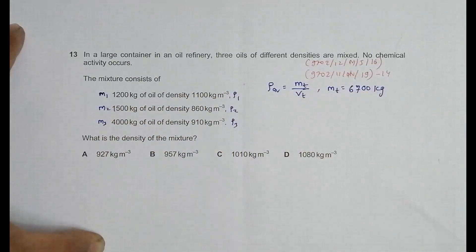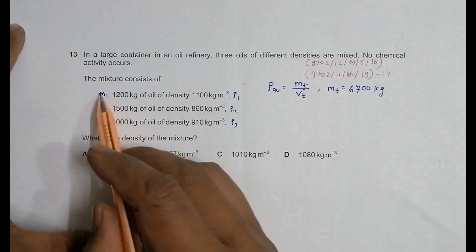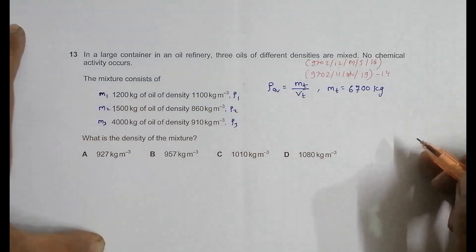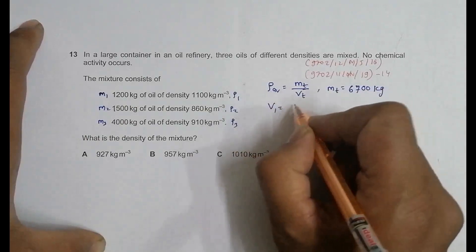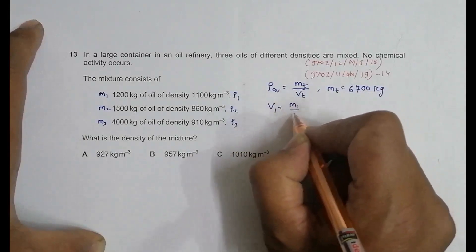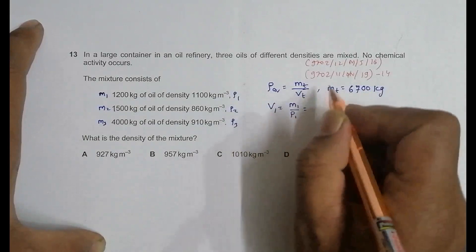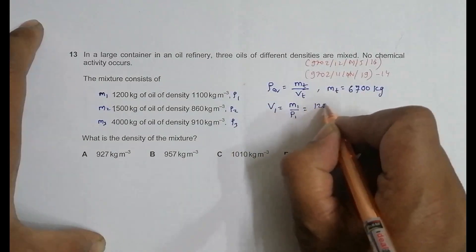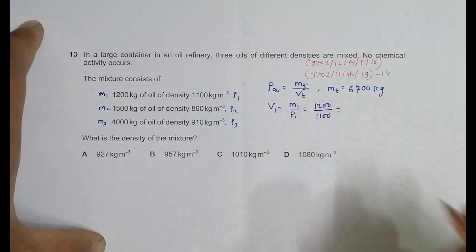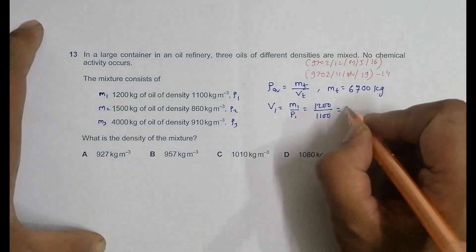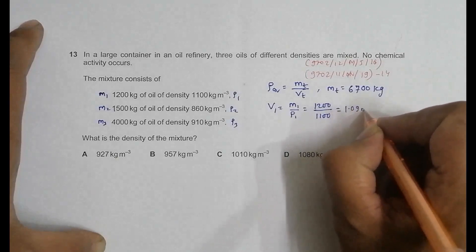Now with the data of masses and densities we have to find the volume because I need volume total. So V1 is equal to m1 divided by ρ1, that's equal to 1200 divided by 1100. When I do it in the calculator it will be 1.09 meter cubed.